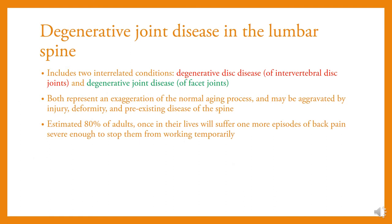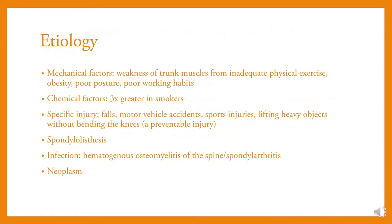Degenerative Joint Disease in the lumbar spine includes two interrelated conditions: degenerative disc disease and degenerative joint disease. Both represent an exaggeration of the normal aging process and may be aggravated by injury, deformity, and pre-existing disease of the spine. It is estimated 80% of adults will suffer one or more episodes of back pain severe enough to stop them from working temporarily. Etiological factors include mechanical factors, weakness of trunk muscles from inadequate physical exercise, obesity, poor posture, and poor working habits.